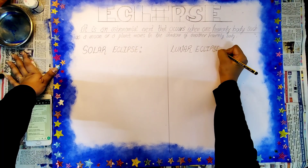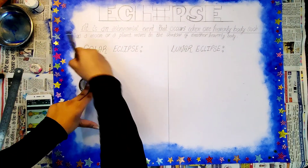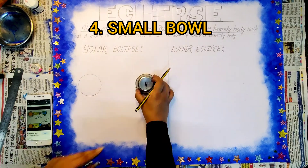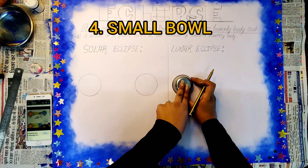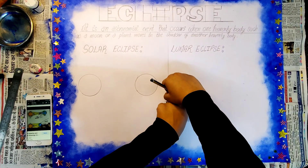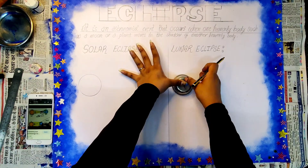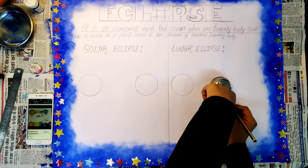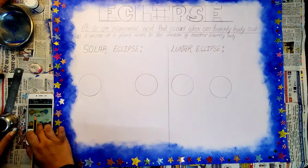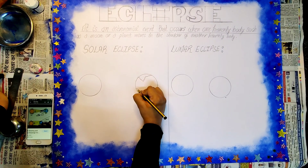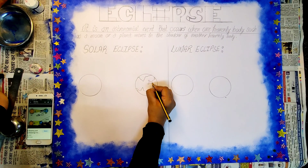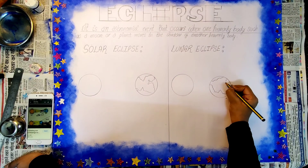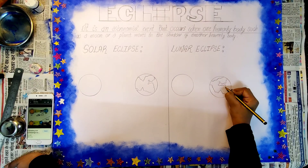Now coming on to the drawing, we'll be needing a small bowl and we'll be drawing two circles parallel to each other — first on the solar eclipse and then on the lunar eclipse. But the second circle of the lunar eclipse will be a bit more closer to the first circle, as you can see in the video. Then we'll draw the structure of Earth on the second circle of the solar eclipse and that of the lunar eclipse.